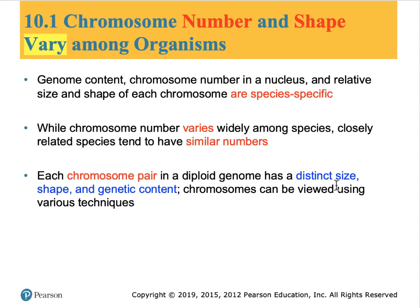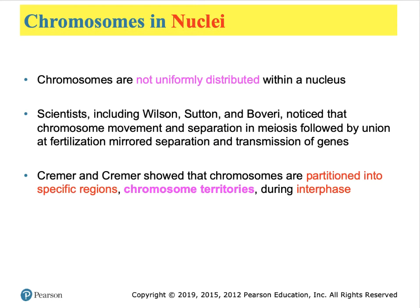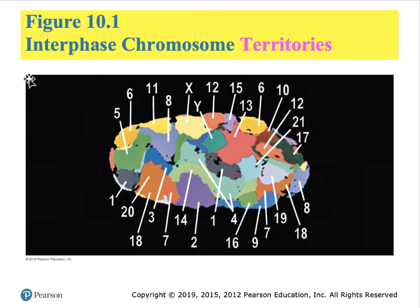Within a chromosome pair of the autosomes, there is a distinct size, shape, and genetic content that is standard for that species. Table 10.1 illustrates chromosome numbers for a few species—humans have 46 chromosomes per cell and chimpanzees have 48. Chromosomes are not scattered randomly throughout the nucleus; each chromosome appears to have a location where it settles down, known as chromosome territories, very evident during interphase as shown in figure 10.1.